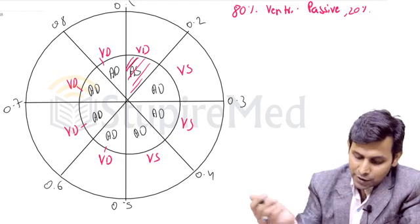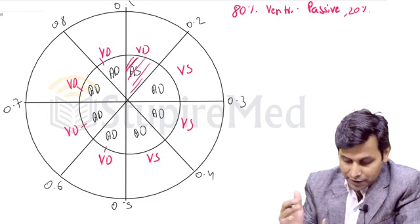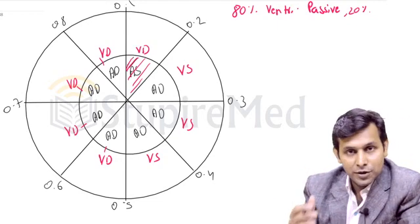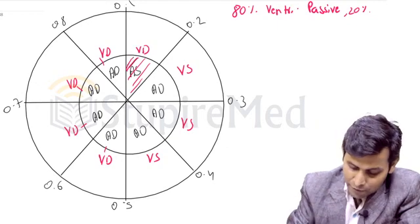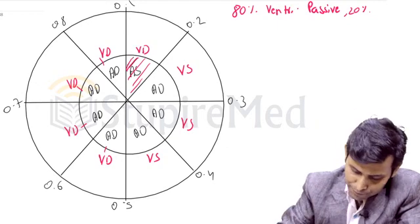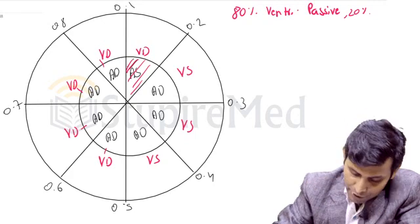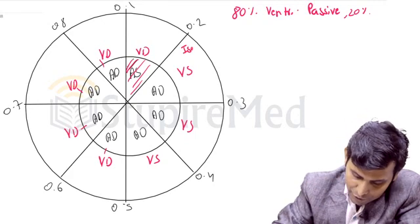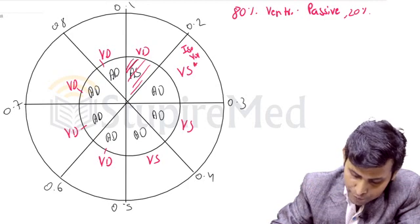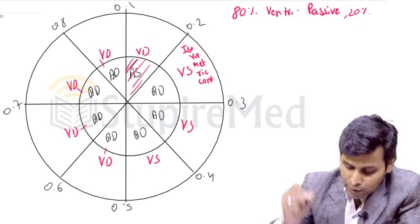Now let us give each of the phases their identity and try to understand each phase in detail. The ventricular systole is 0.3 seconds. The first phase in ventricular systole is isovolumetric contraction.